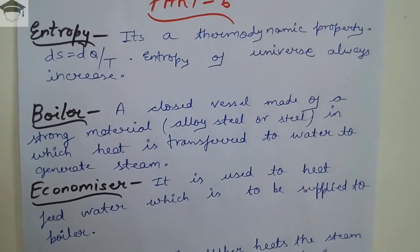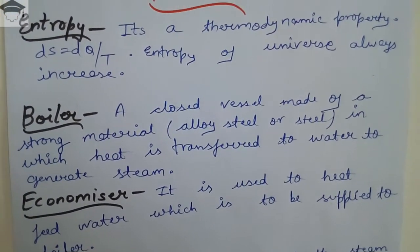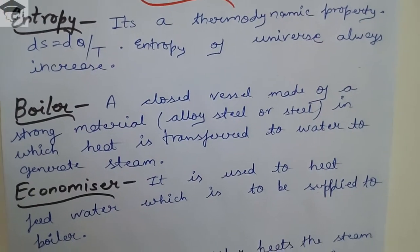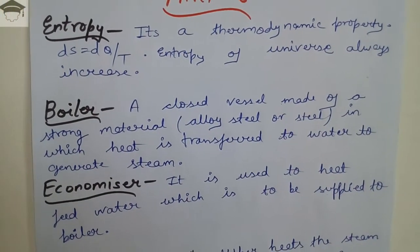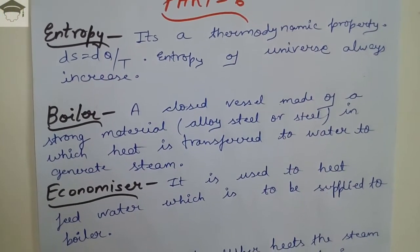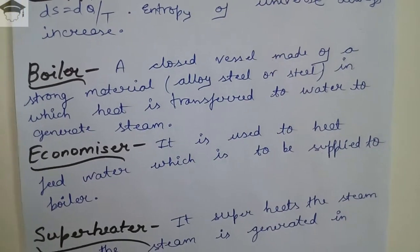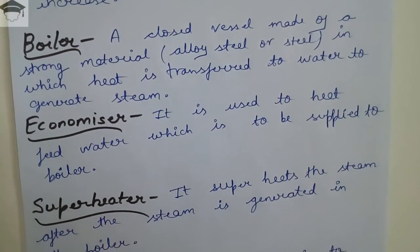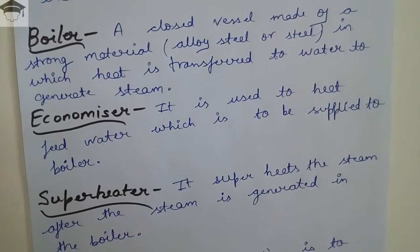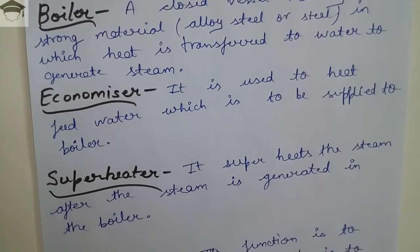The second term is boiler — a closed vessel made of strong material, preferably alloy steel or simple steel, in which heat is transferred to water to generate steam. The third term is economizer, which is used to heat feed water that is to be supplied to the boiler.